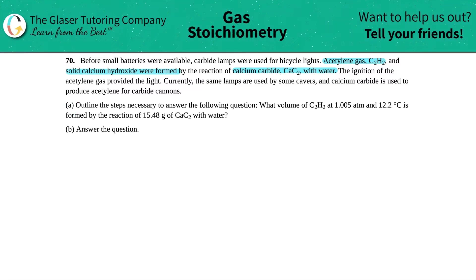The ignition of the acetylene gas provided the light. Currently, the same lamps are used by some carvers, and calcium carbide is used to produce acetylene for carbide cannons. Letter A: outline the steps necessary to answer the following question. What volume of acetylene C2H2 at 1.005 atm and 12.2 degrees Celsius is formed by the reaction of 15.48 grams of calcium carbide CaC2 with water? And then B, we have to answer the question.